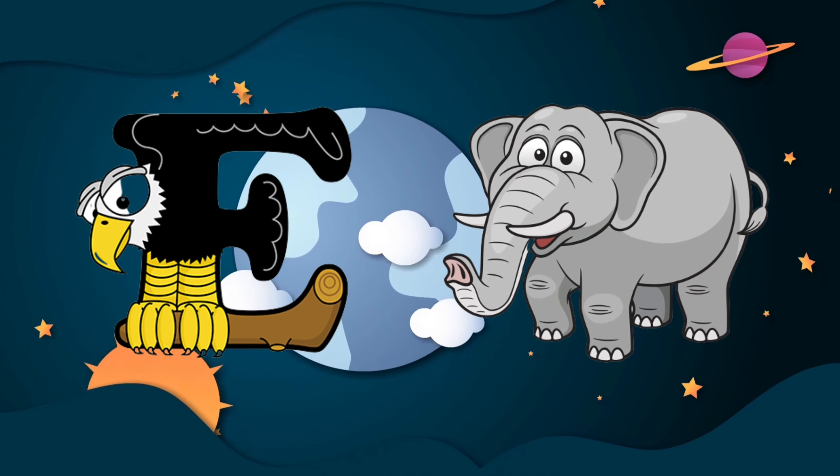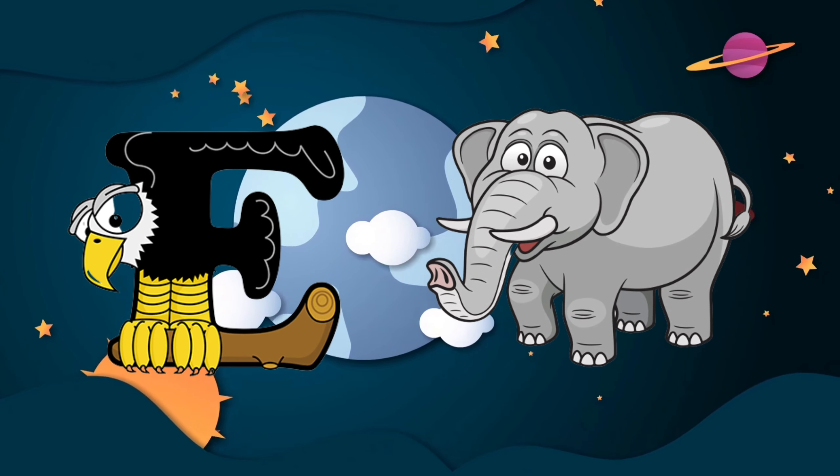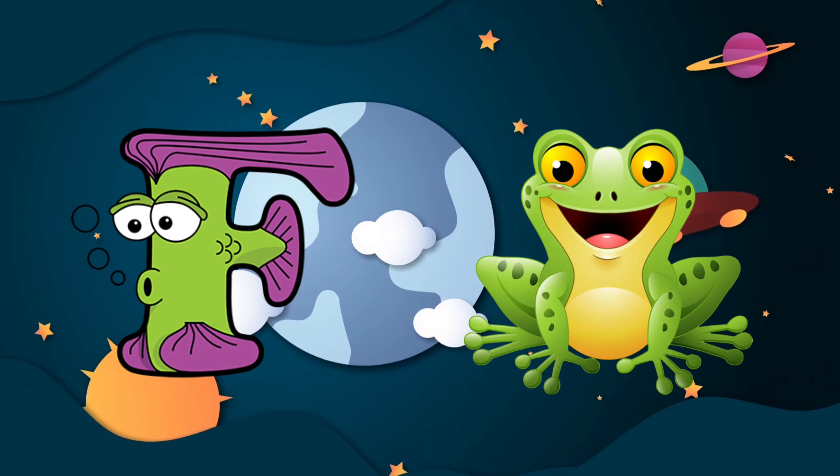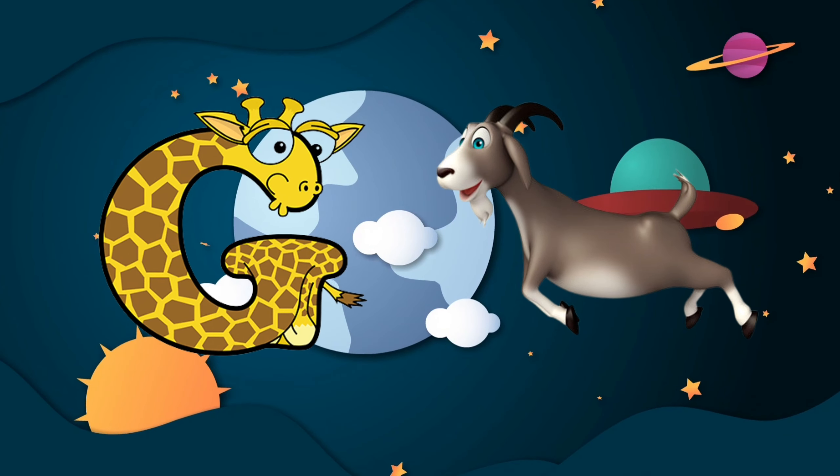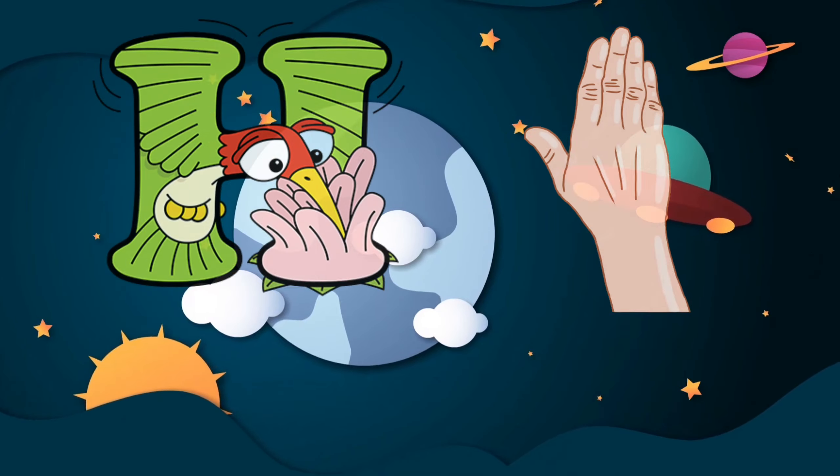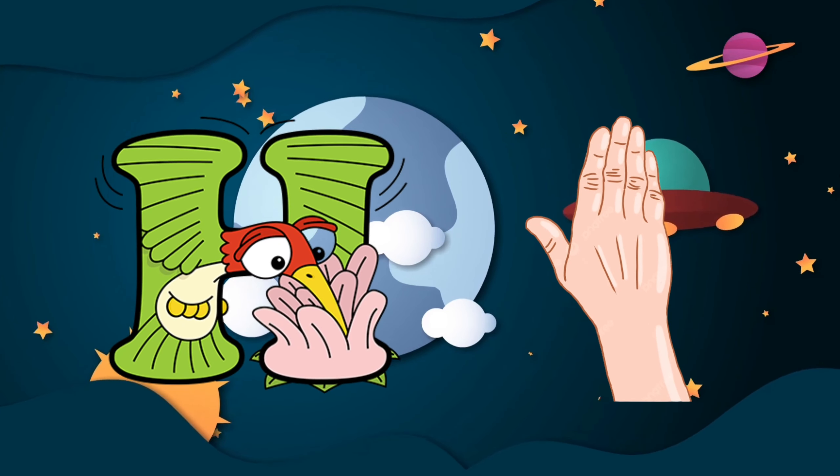E is for elephant, e-e-elephant. F is for frog, f-f-frog. G is for goat, g-g-goat. H is for hand, a-a-hand.